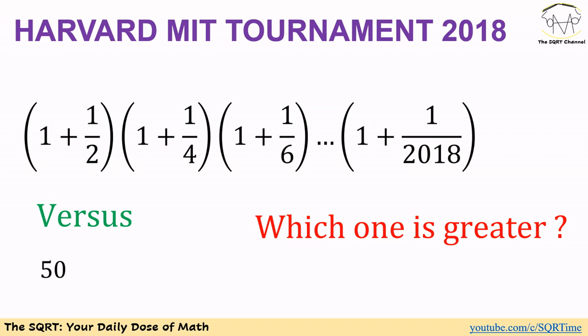Hello everyone, welcome to the SQRT channel. In this video we are going to take a problem from the Harvard-MIT tournament from 2018. In this problem we have two numbers: the first one is a product of various terms — 1 plus 1 over 2, times 1 plus 1 over 4, times 1 plus 1 over 6, and so on up to 1 plus 1 over 2018.